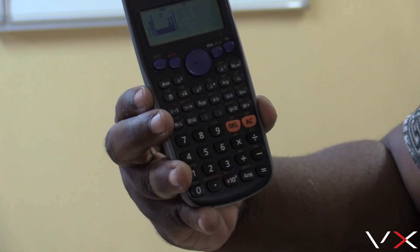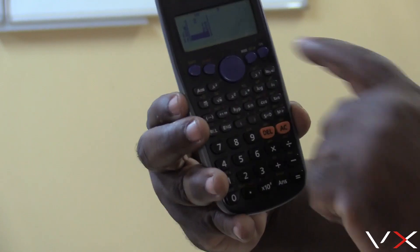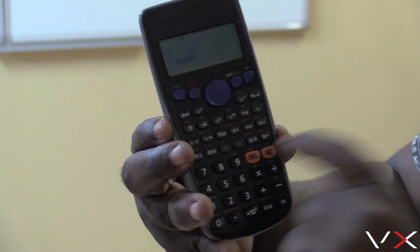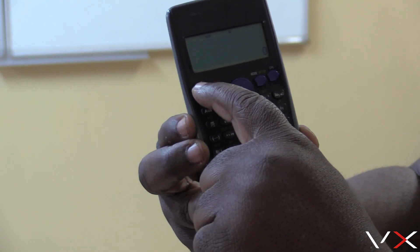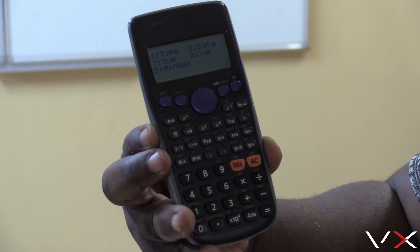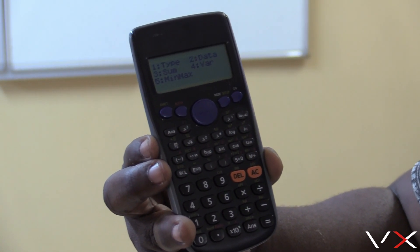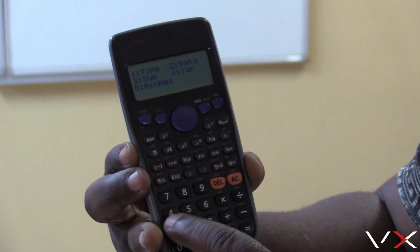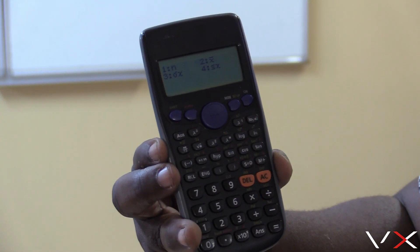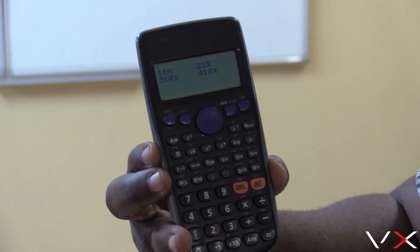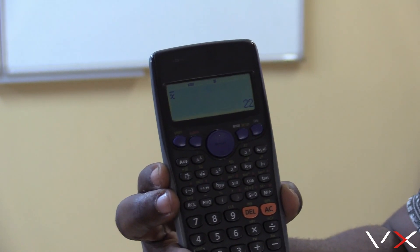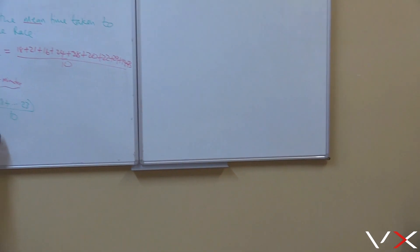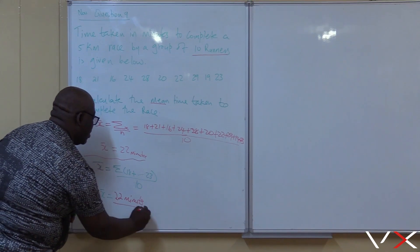Once the data is entered, do not press ON — all the data will be lost. Press AC instead. After pressing AC, go to stats mode by pressing Shift then Stats. It will ask what you want. Select variance, which is number four — VAR. Then select number two, which is X bar, press equals, and it gives you 22 minutes.